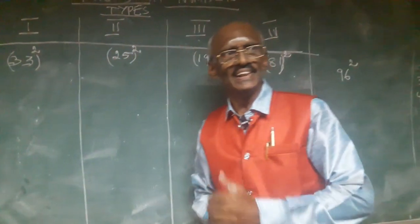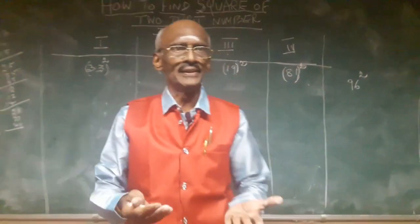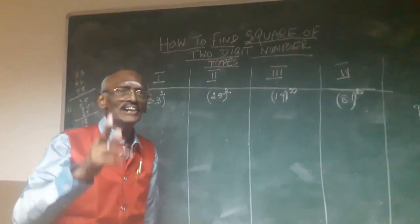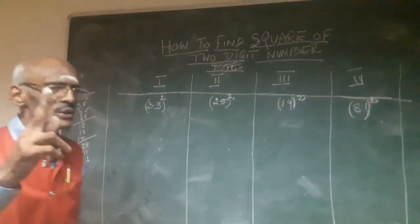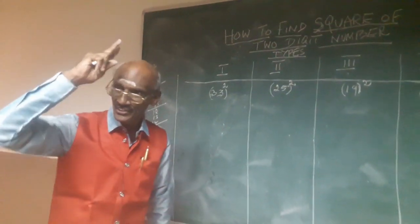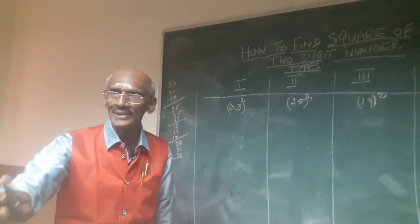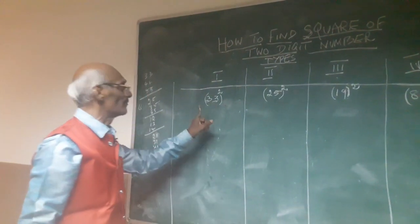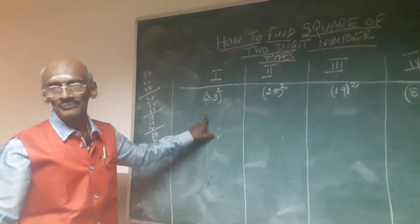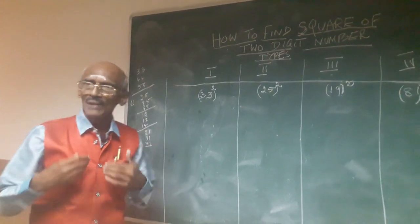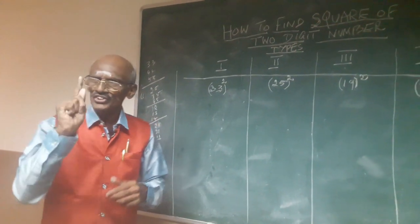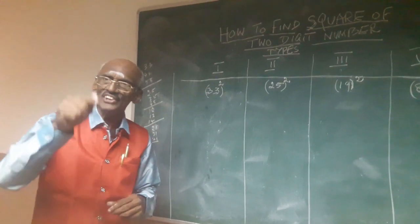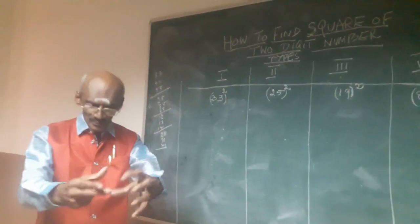With this basic idea you can find the square of any two-digit number within two seconds. That is very important — within two seconds you can find the answer. I am going to explain one shortcut method; it is a scientific shortcut method, a simple trick you can apply for finding the square of any two-digit number.